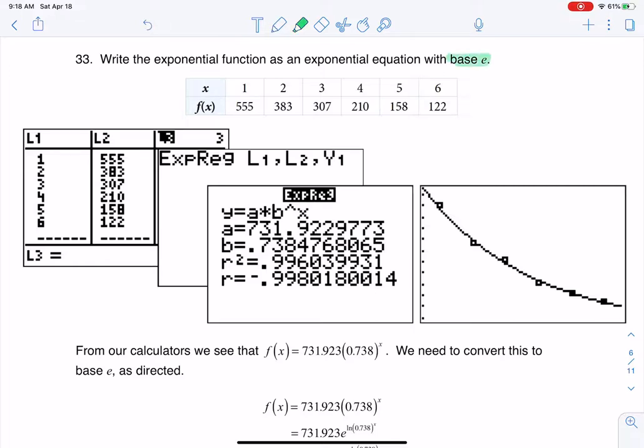The trickier part here is that when you run exponential regression—which you see me put my data in my list, doing L1, L2, Y1—when I run exponential regression, it doesn't give you your model in base e. For this particular problem, it gave it to us in base b, which was 0.738.